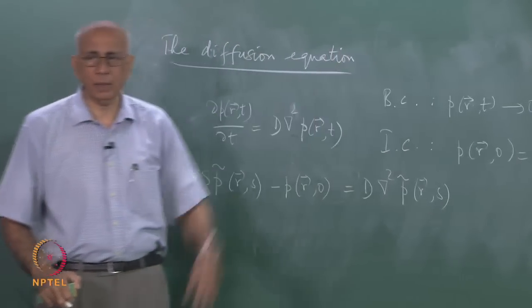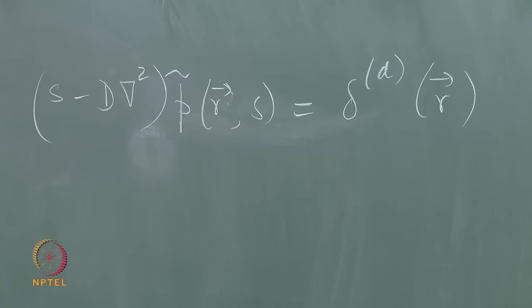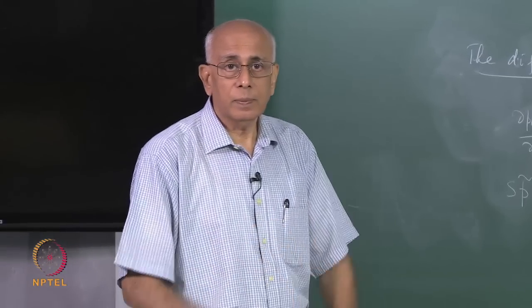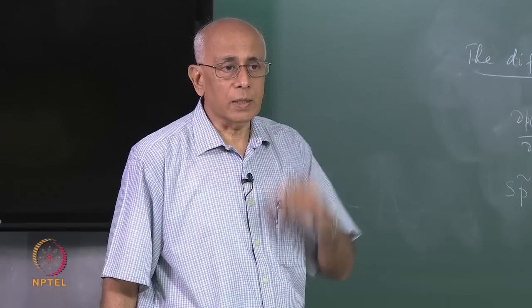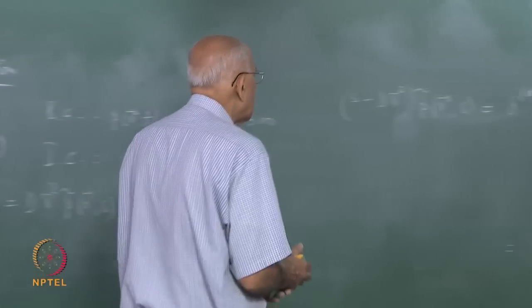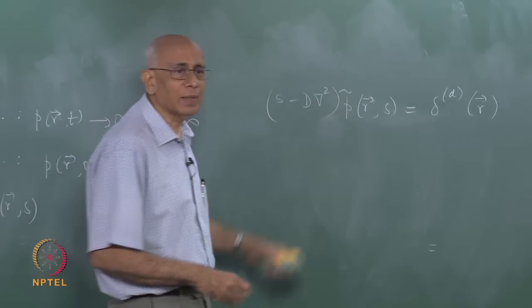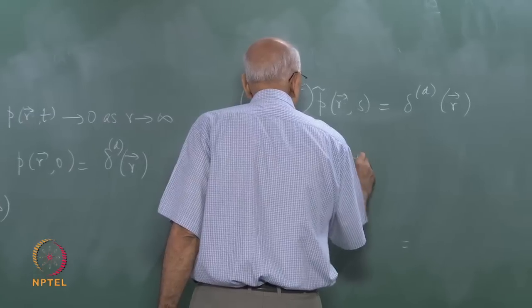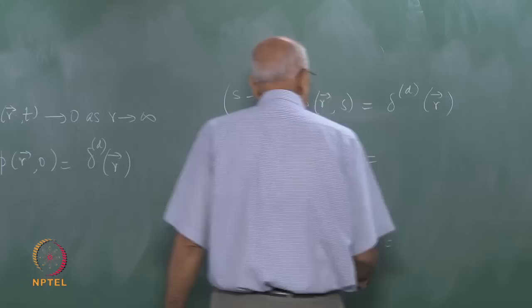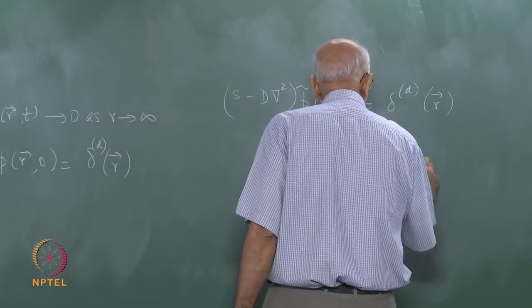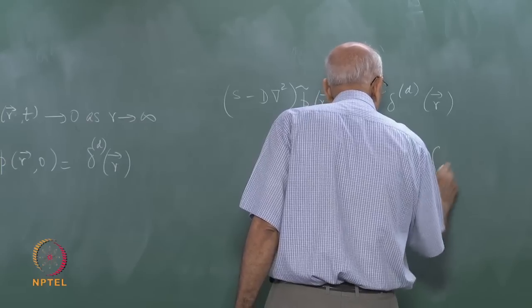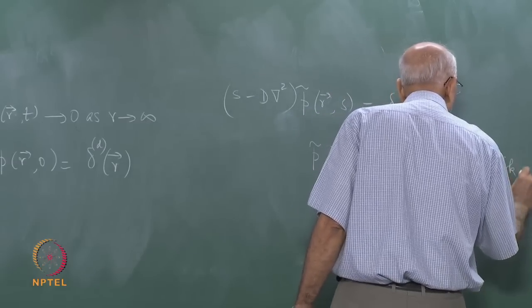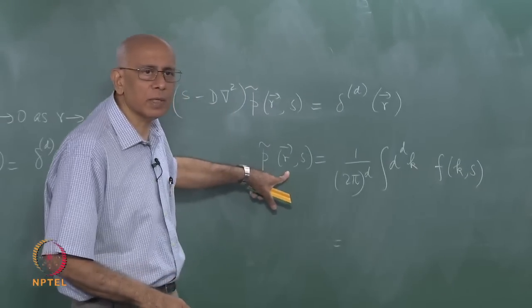So we end up with the operator s minus D del-squared acting on P-tilde of r comma s equal to delta-d of r — that was the initial condition moved to the right-hand side. I still have the del-squared and now I do the Fourier transform. Let me write P-tilde of r comma s as 1 over (2 pi)^d times the integral d^d k e^(ik·r) f of k comma s, where f of k comma s is the Fourier transform with respect to r.